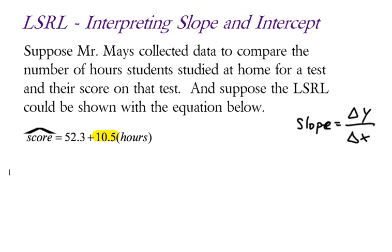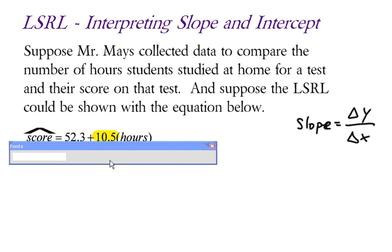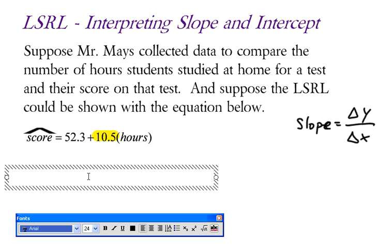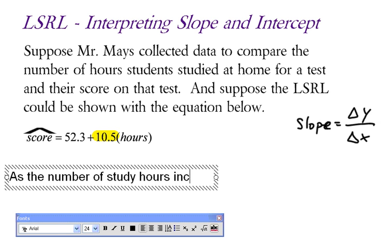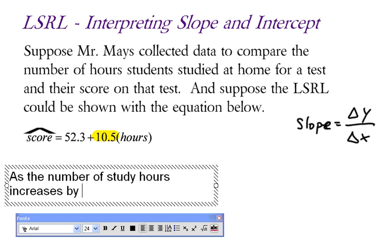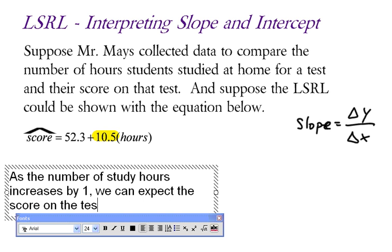I'm going to type my answer since it's a little bit longer sentence here. If I were to interpret the slope, I would say, as the number of hours studied, or let's say the number of study hours increases by 1, we can expect the score on the test to increase by 10.5 points.